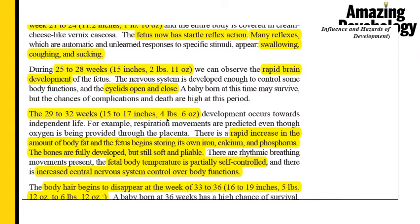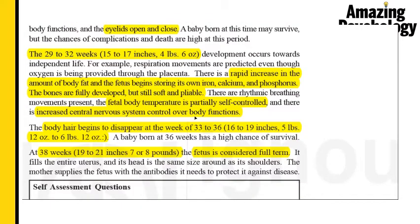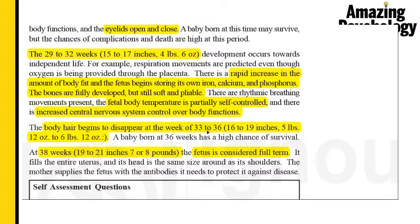At 29 to 32 weeks the baby grows to about 15 to 17 inches and weighs about 4 pounds and 16 ounces. There is a rapid increase in body fat, the fetus starts storing its own iron, calcium, and phosphorus, the bones are fully developed but still soft, the fetus starts partially regulating its body temperature, and the nervous system controls most body functions.